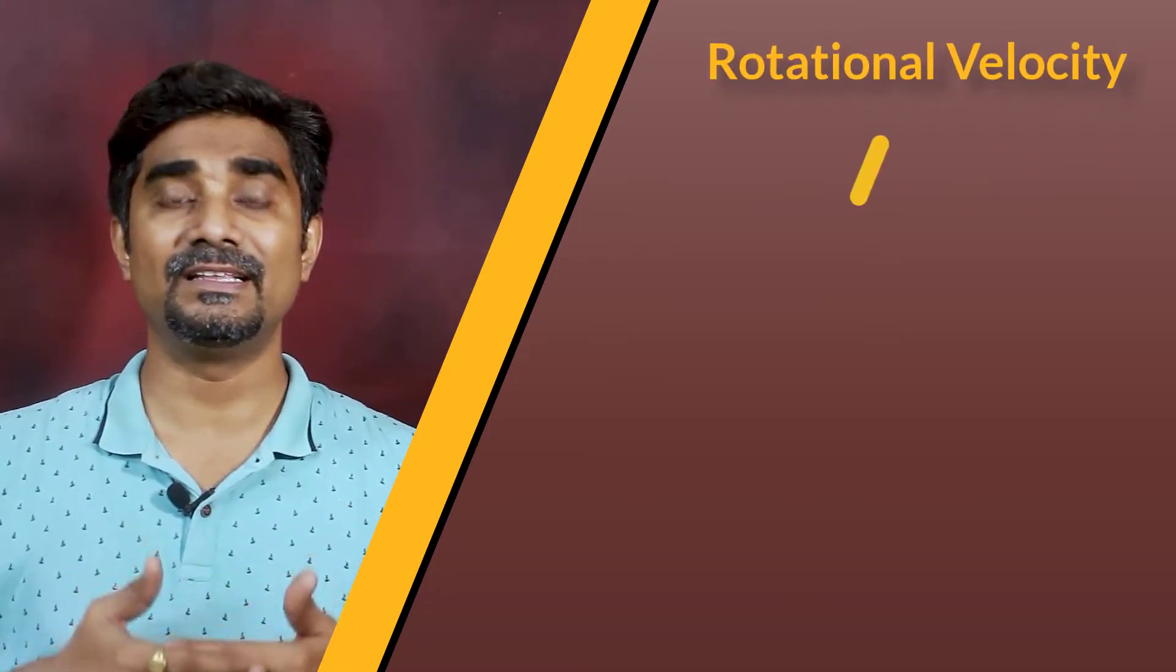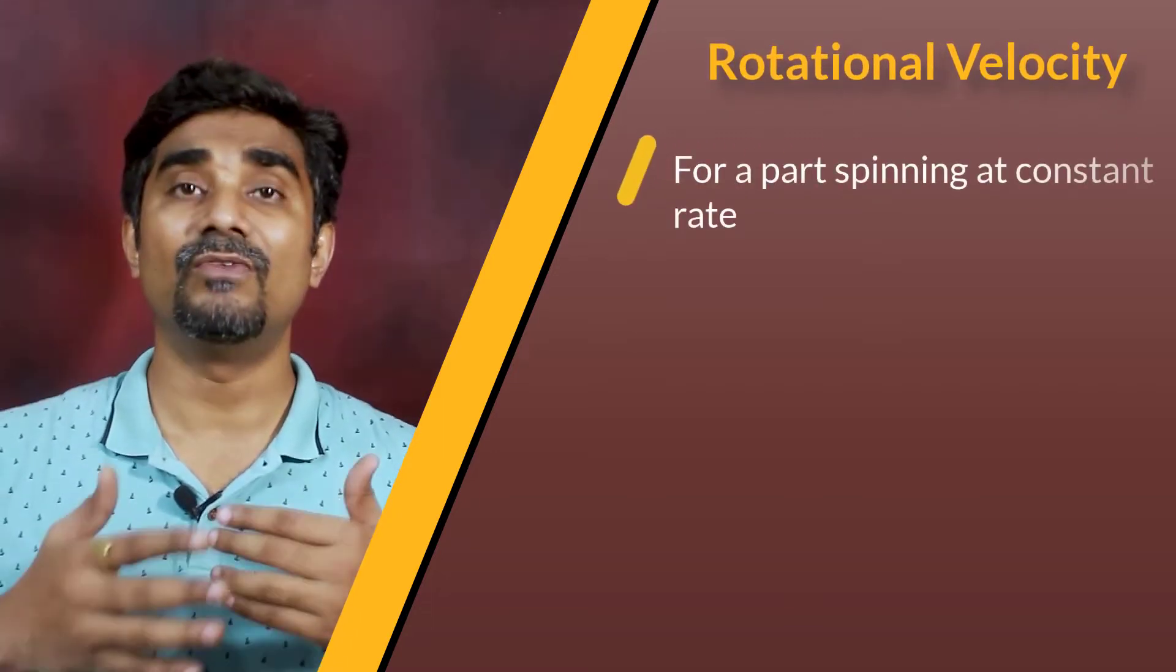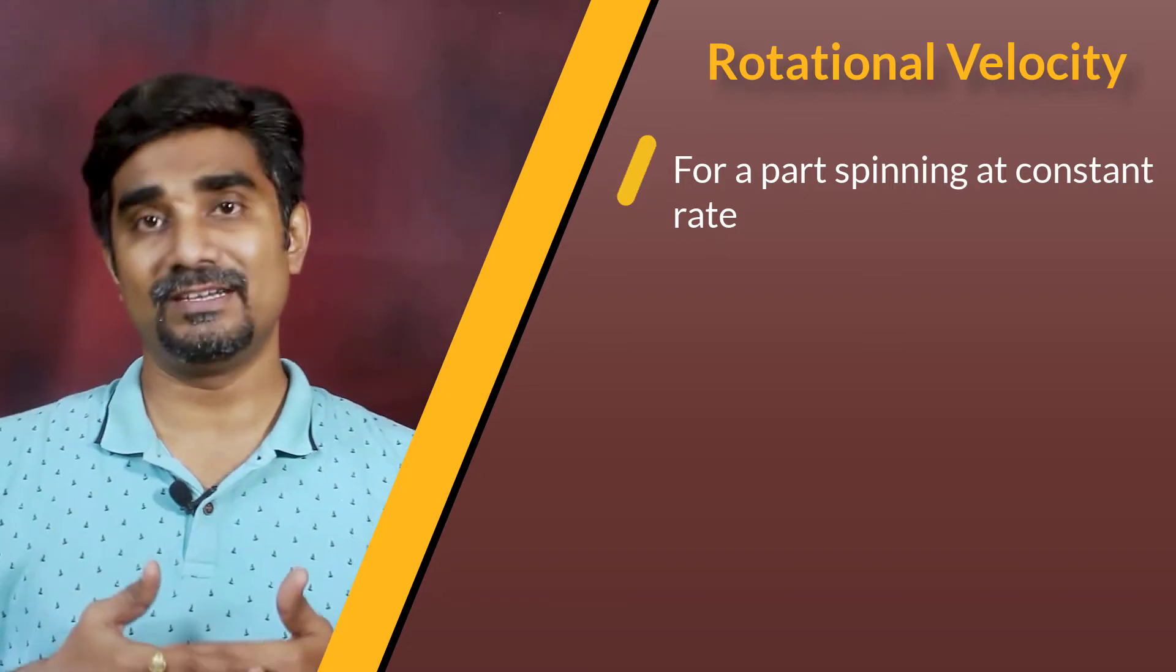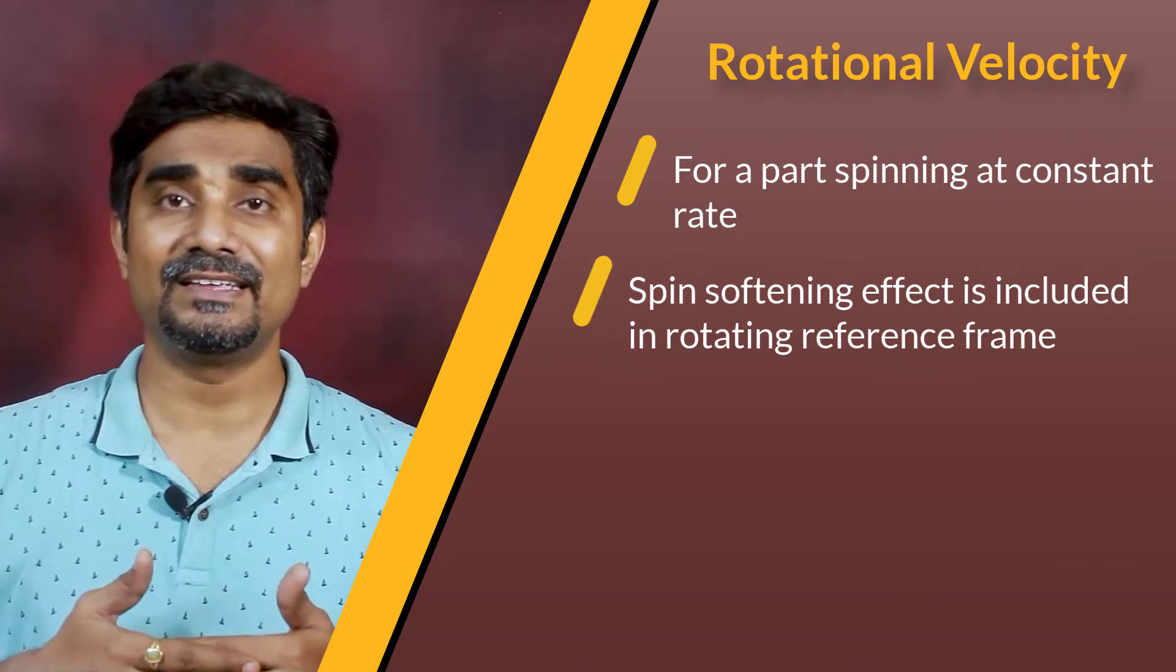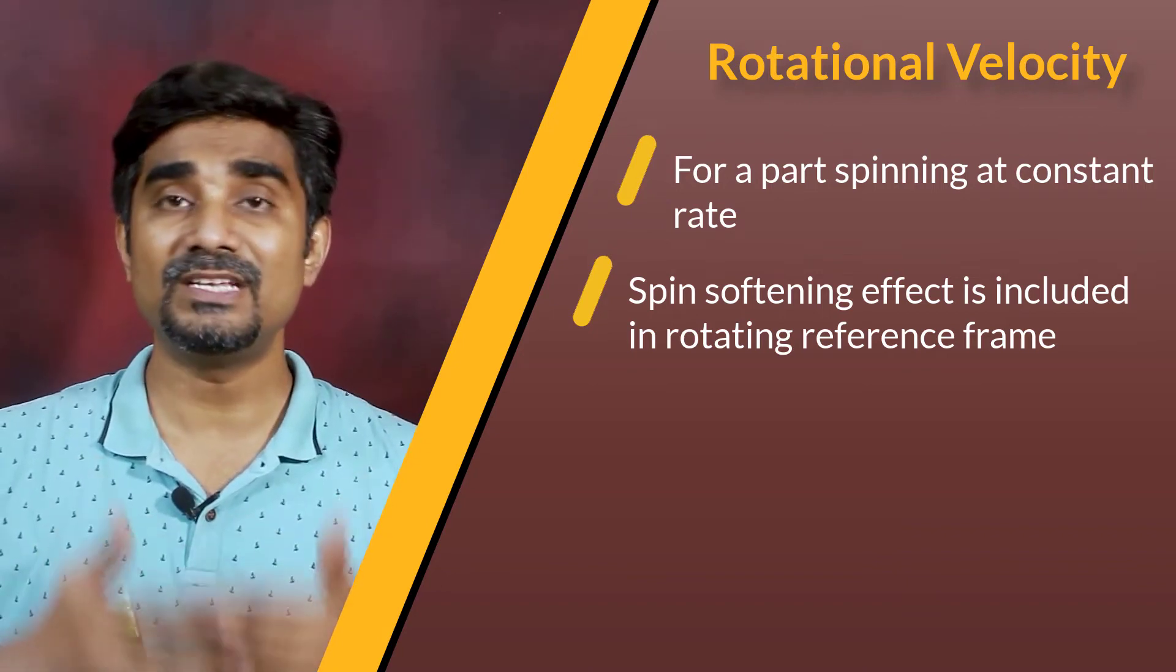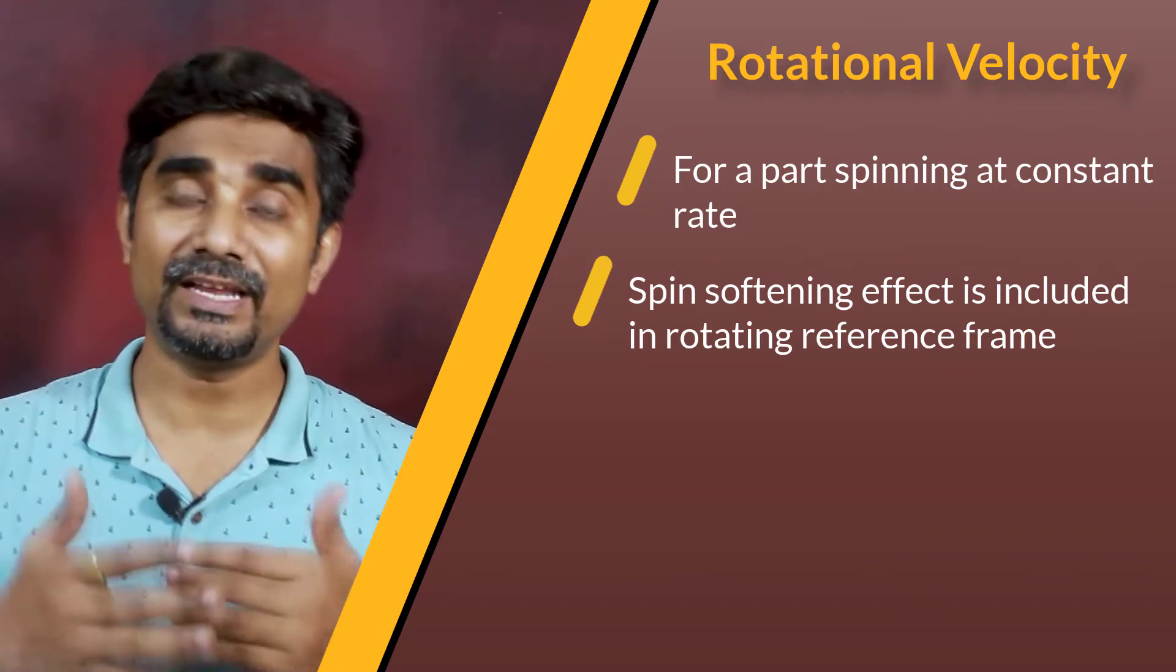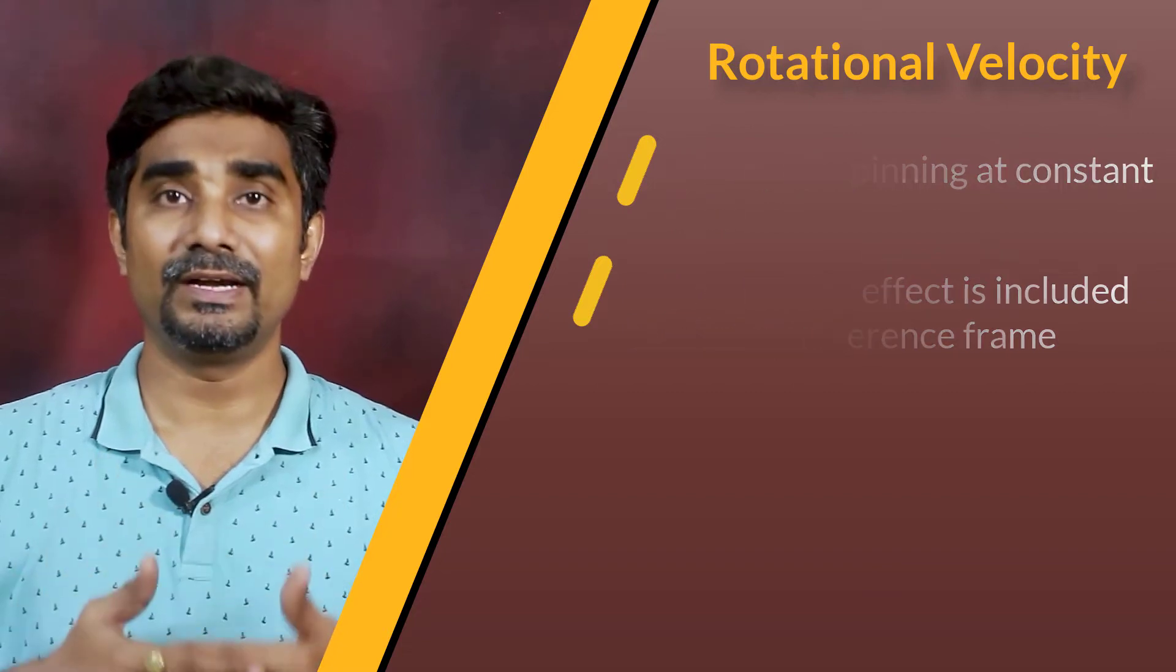Then, we have rotational velocity for considering the structural effects of a part spinning at a constant rate. For rotational velocity defined in static structural analysis, the spin softening effect is automatically included in the rotating reference frame.